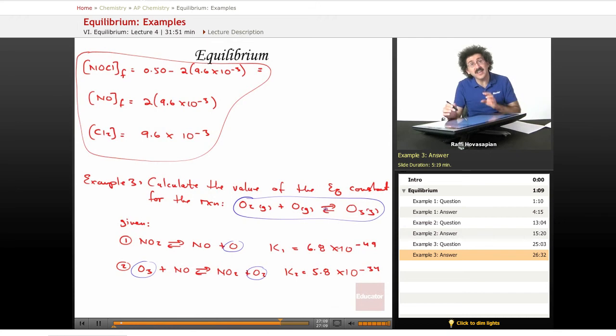Well, when we did delta H's, when we did enthalpies, we just added the enthalpy. With K's, with equilibrium constants, it's actually different. When we add equations to get a final equation, what we do to equilibrium constants is we actually multiply them.